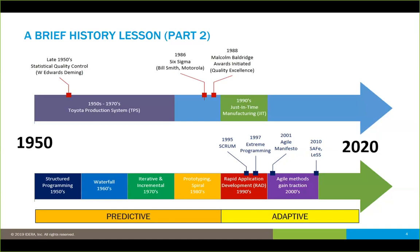The 1980s brought about things like prototyping and spiral. Those first four decades had a focus on predictive methodologies — really trying to turn development into a science so you could predict outcomes. But after that we started moving into more adaptive methodologies. That's when we brought in rapid application development in the 1990s, then the birth of Scrum in '95, extreme programming in '97, and the Agile Manifesto published in 2001. All of these methodologies, especially the predictive ones, have their roots back to the same principles of measurement and predictive metrics that came out of those manufacturing concepts.